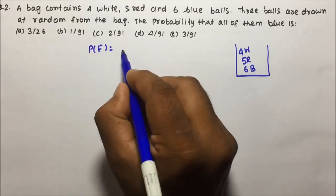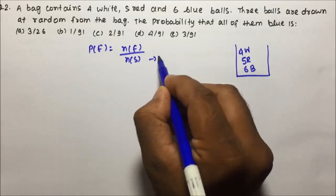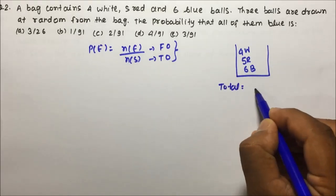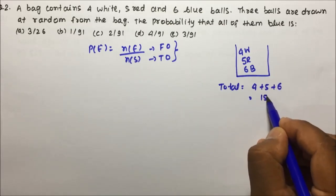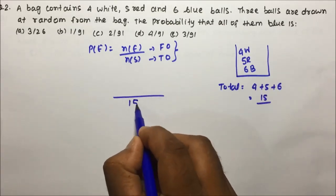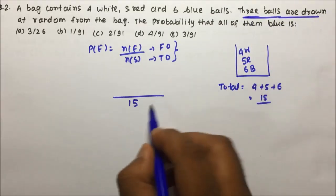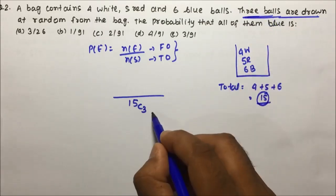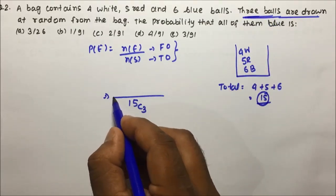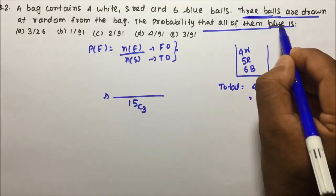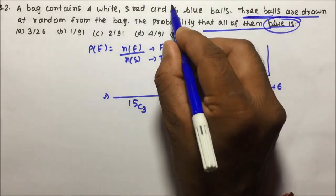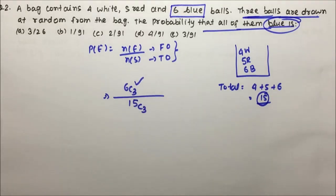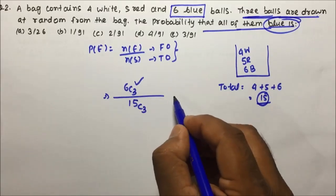The formula for probability is Ne divided by Ns, where Ns equals total outcomes and Ne equals favourable outcomes. The total number of balls is 4 + 5 + 6 = 15. Since 3 balls are drawn, the total outcomes = 15C3. For the favourable outcomes, we want all 3 balls to be blue, so we select all 3 from the 6 blue balls: 6C3. Therefore, probability = 6C3 / 15C3.